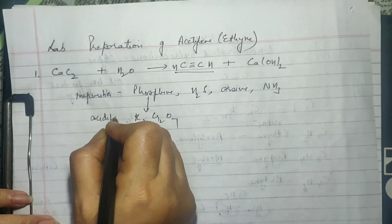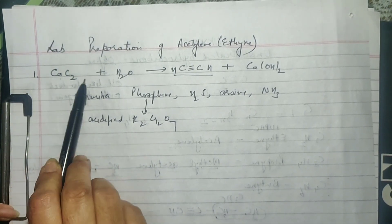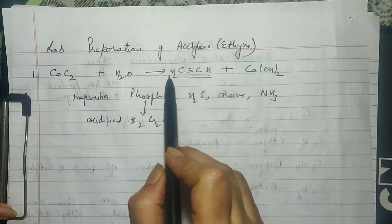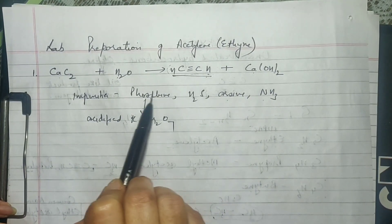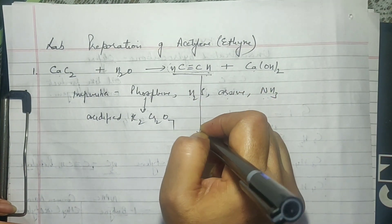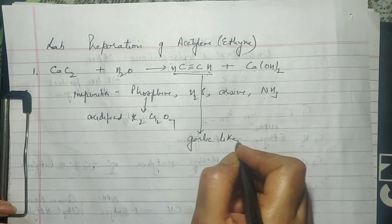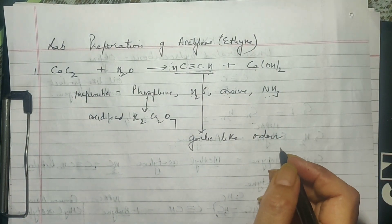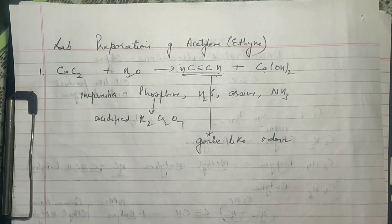To summarize the process: you add water drop by drop to calcium carbide, which forms ethyne and calcium hydroxide. The ethyne produced contains impurities like phosphine, H2S, arsine, and ammonia — all bad-smelling gases. As a result, the gas produced has a garlic-like odor, sometimes described as resembling goat's butter, due to these impurities.